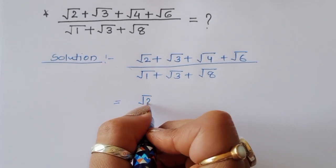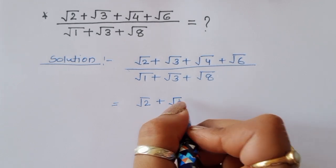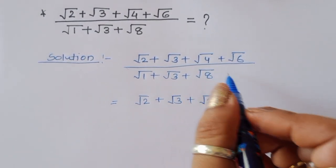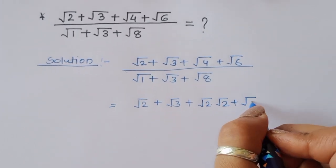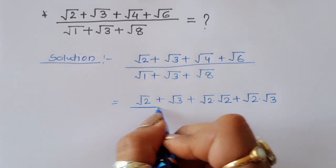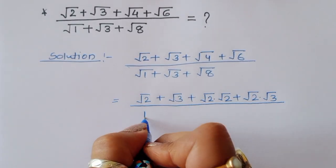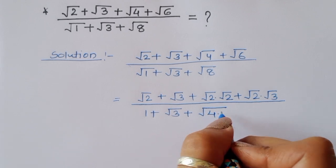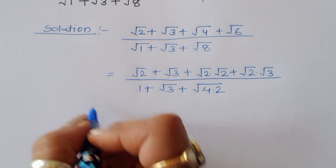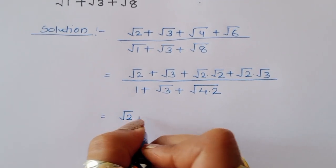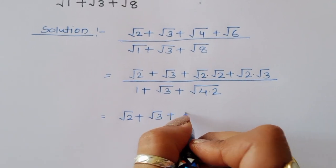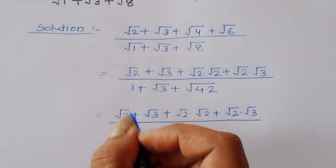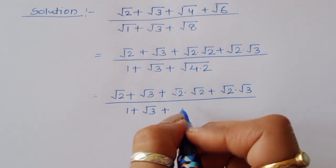Square root of 2 stays as is, square root of 3 stays as is, square root of 4 we can write as square root of 2 times square root of 2, and square root of 6 we can write as square root of 2 times square root of 3, divided by square root of 1, that is 1, plus square root of 3, plus square root of 8, which is 4 times 2.